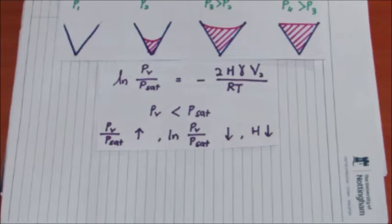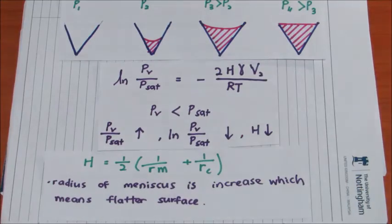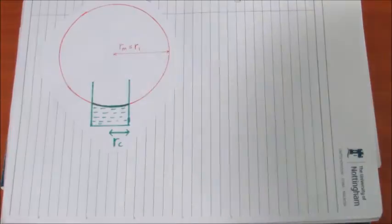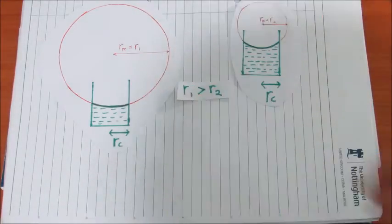H equals half of (1/RM + 1/RC). This implies that the radius of meniscus increases and forms a flatter surface. A flatter surface has a larger radius of meniscus and a higher equilibrium vapor pressure.